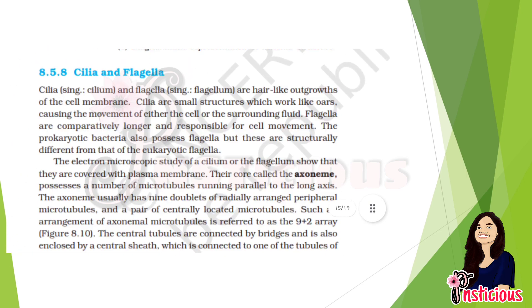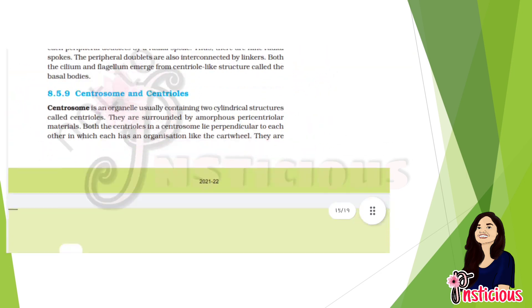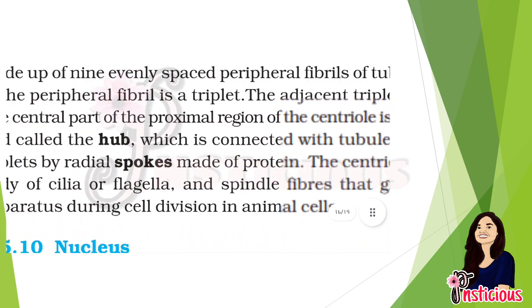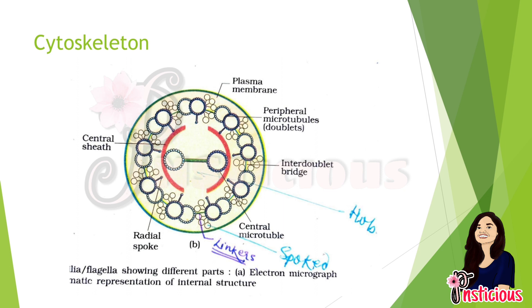The central sheet has two structures that form the plus-two arrangement in the cartwheel structure. Electron microscopic study of cilia and flagellum showed that they are covered by the plasma membrane. The core is called the axoneme and possesses microtubules running parallel to the long axis. The peripheral double-connected tubules are called radial spokes, and the interconnecting green lining is called a linker. Both cilia and flagella emerge from centriole-like structures called basal bodies.